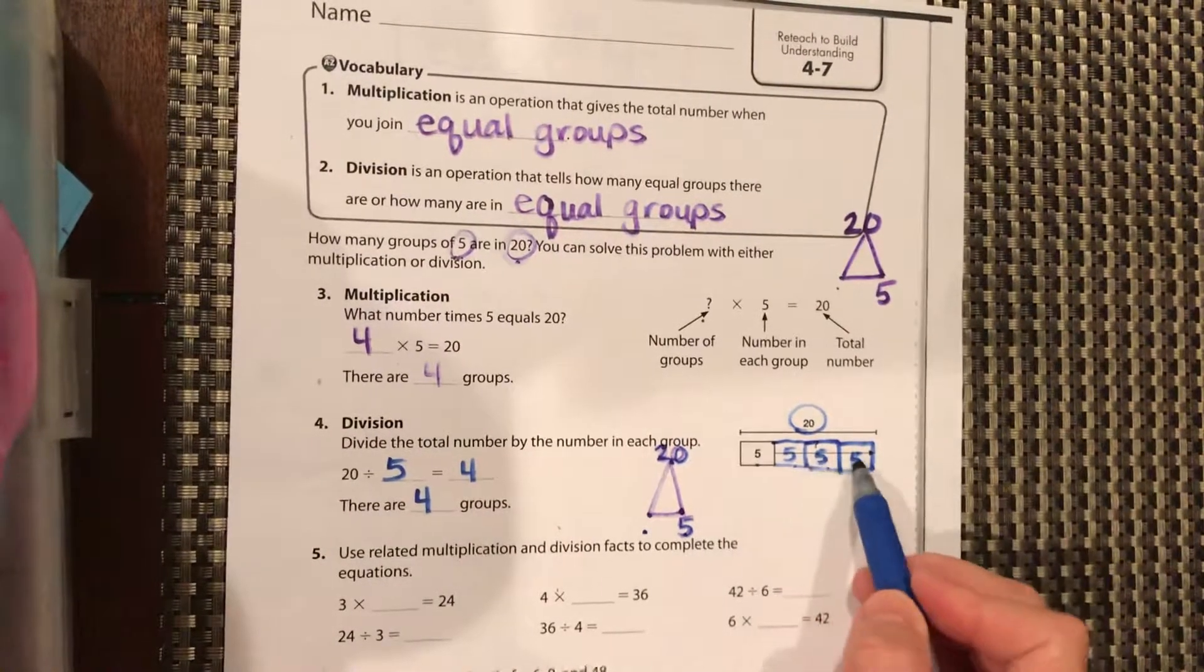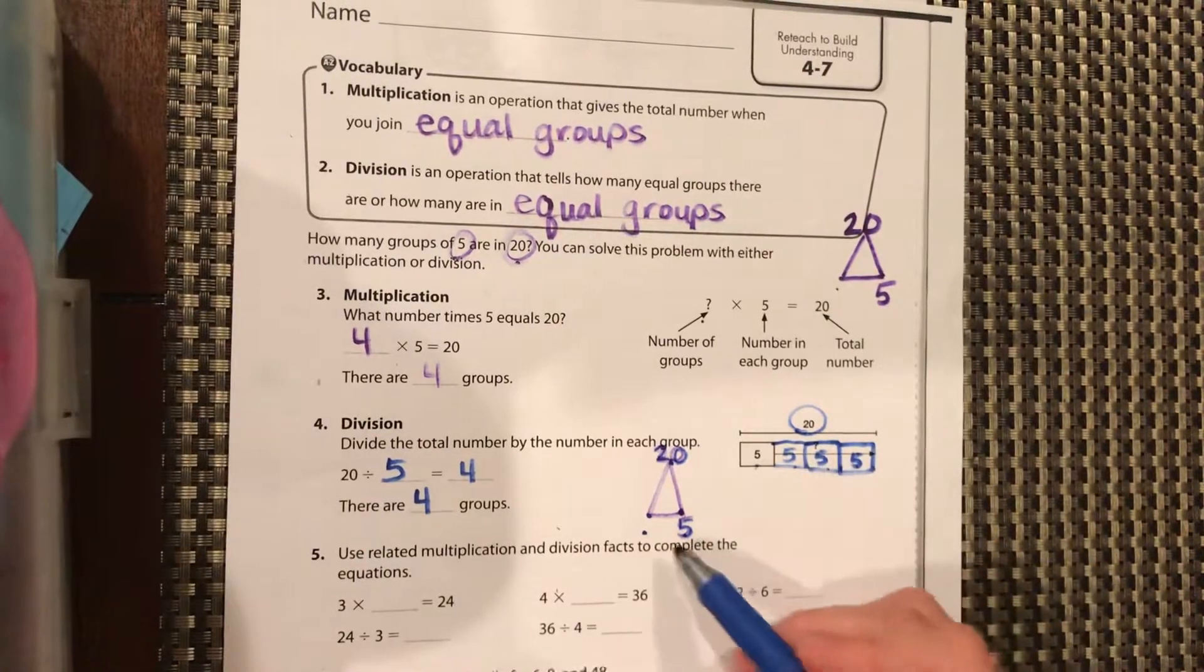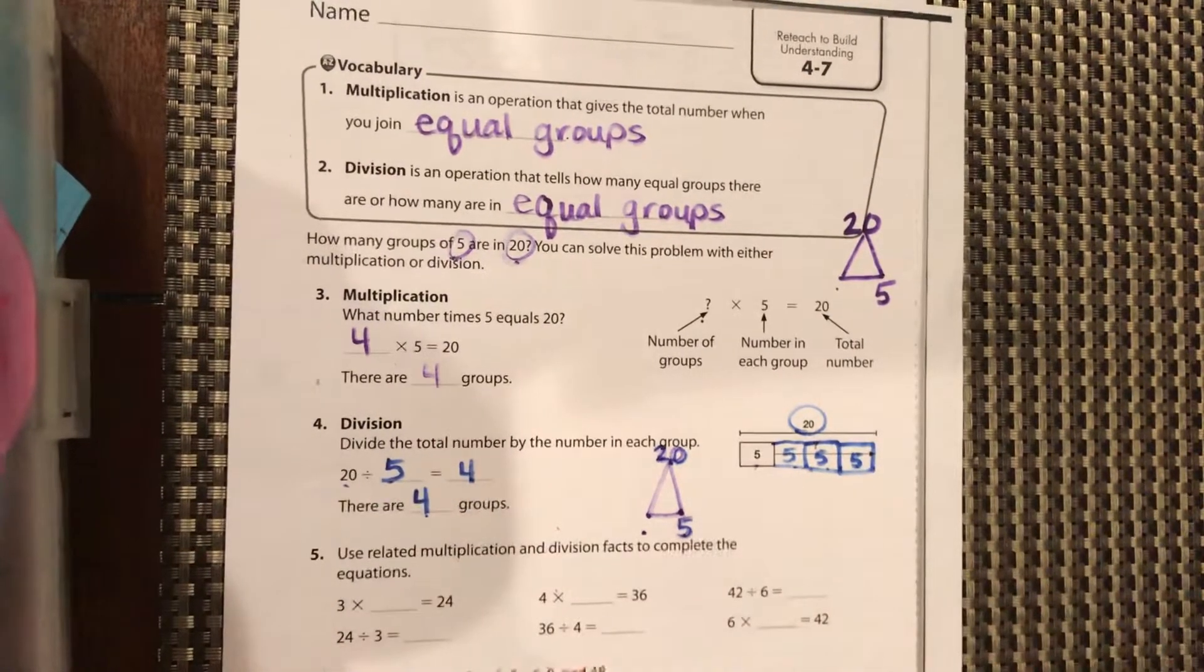So five, 10, 15, 20. That means there's four groups of five. Four times five equals 20.